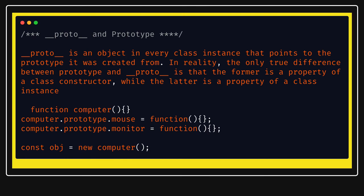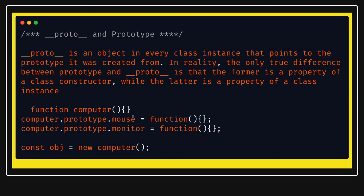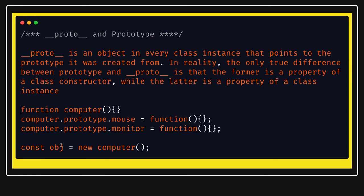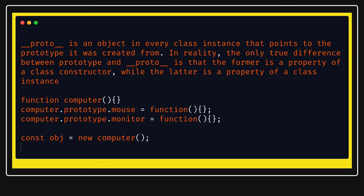Objects have proto, and functions have a prototype — that is the simple base rule. Proto is a property in every object instance that points to an object. When we create the object by calling new computer, that new keyword creates a new object using the constructor function, and the resulting object will have a proto. Let's see how proto and prototype are linked.